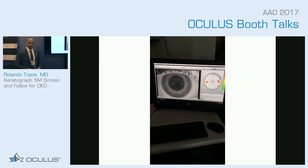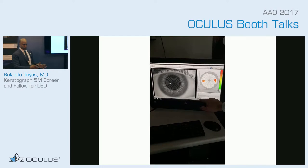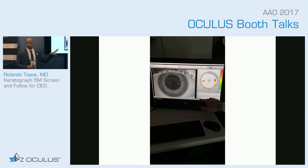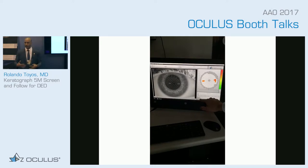That was measuring the non-invasive tear breakup time. When the techs gather this information, they can put it into the chart — we do electronic medical records. I can walk in the room and see the information we're getting off the topographer. I can say, okay, this patient has a tear breakup time of less than 10 seconds — they're obviously a dry eye patient, we're going to have to do something. Even if you're not a dry eye specialist, you're going to need this information for screening your cataract and LASIK patients.